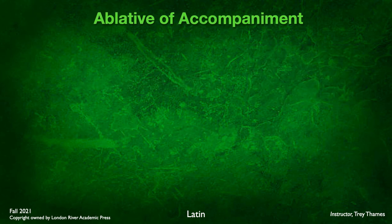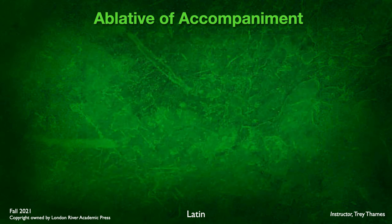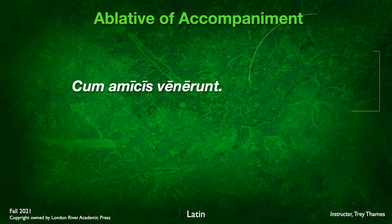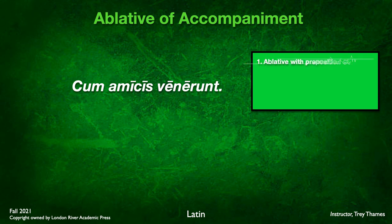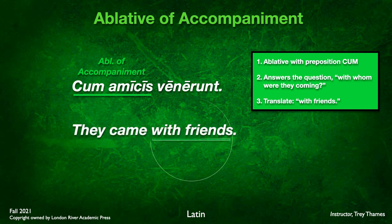The ablative of accompaniment answers the question: with whom is the action carried out? You recognize it when the ablative noun is preceded by the preposition cum, and you translate it as with. Example: cum amicis venerunt — they came with friends. The preposition cum is present, and it answers with whom they came, making it ablative of accompaniment.